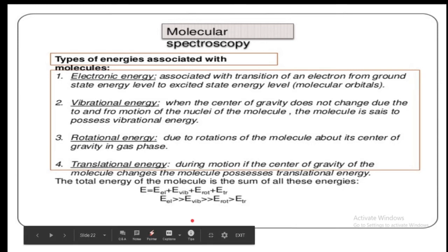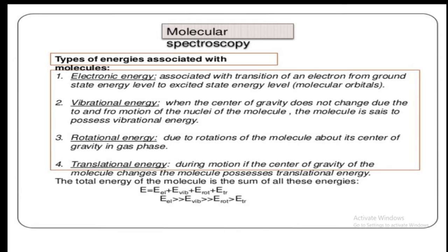The total energy of a molecule in space is the sum of its rotational, vibrational, and electronic energies. The rotational, vibrational, and electronic energies are quantized — they are designated by the quantum number N, which may have integral values starting from N = 1, 2, 3, etc.